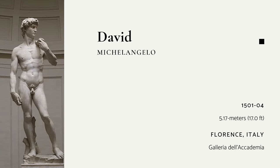Michelangelo's David is the quintessential work of Renaissance sculpture. Created between 1501 and 1504, he carved a statue from a piece of discarded marble. It was originally meant to be a part of a series featuring Old Testament figures, but it was so impressive that it became a featured solo piece. Standing at around 17 feet tall, the David dominates a space. Today, you can view it at the Galleria dell'Accademia in Florence, Italy.